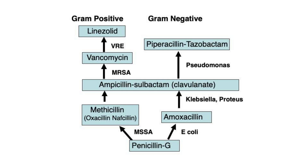On the gram-negative side, the ureidopenicillin piperacillin was discovered, which kills pseudomonas in addition to the gram-negatives covered by ampicillin-sulbactam. To enhance coverage, this penicillin has been combined with another beta-lactamase inhibitor, tazobactam. This combination has the commercial name Zosyn and is one of the most popular very broad-spectrum antibiotics because, in addition to enhanced gram-negative coverage, it also kills MSSA and anaerobes.